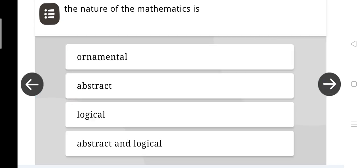The nature of the mathematics is, ornamental, abstract, logical, abstract and logical. And the right answer is, abstract and logical.